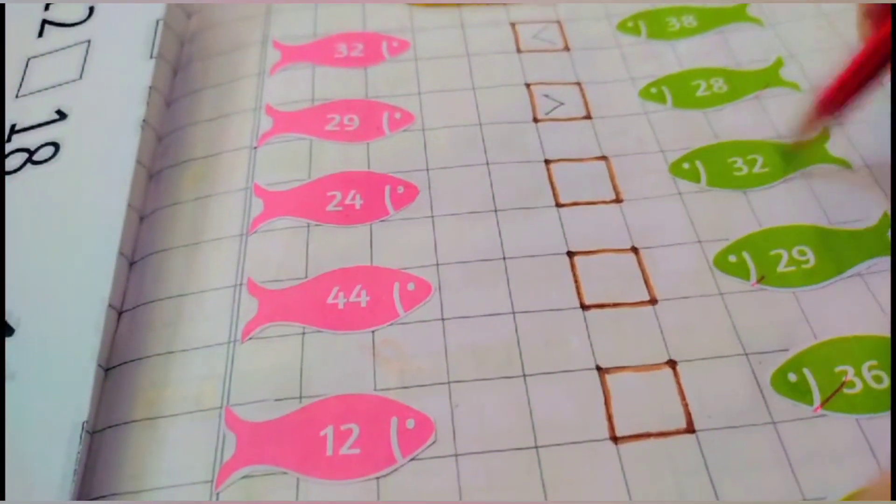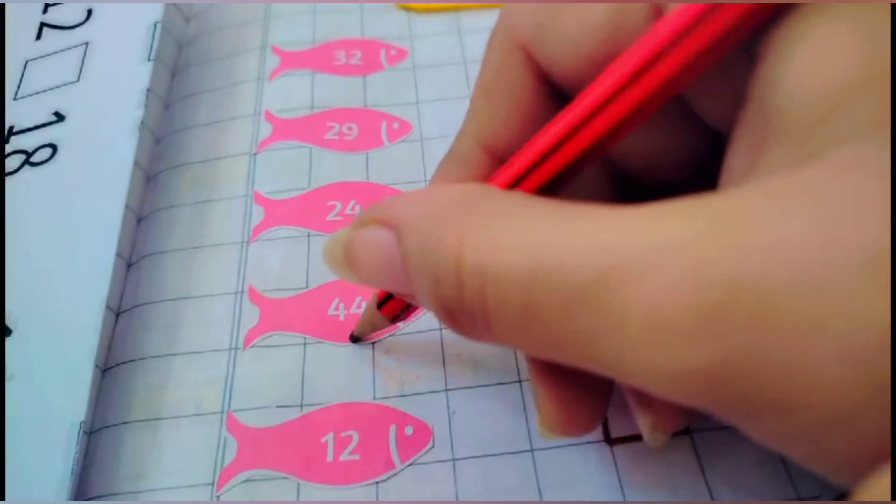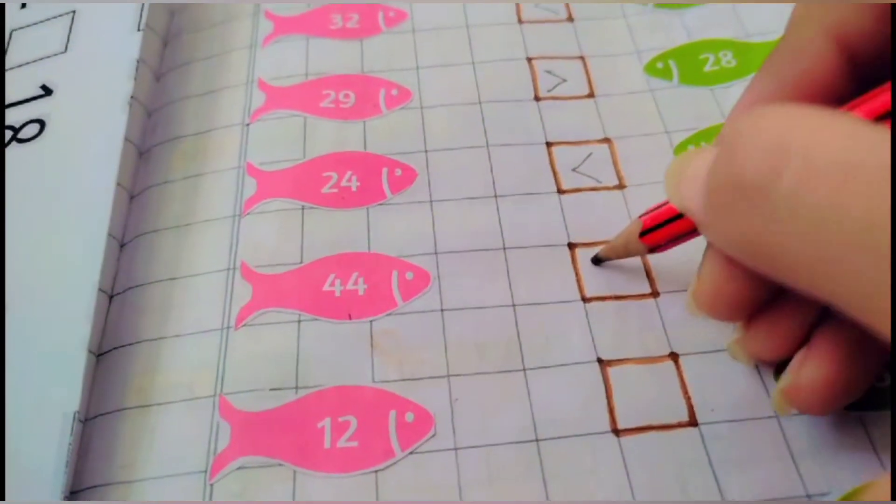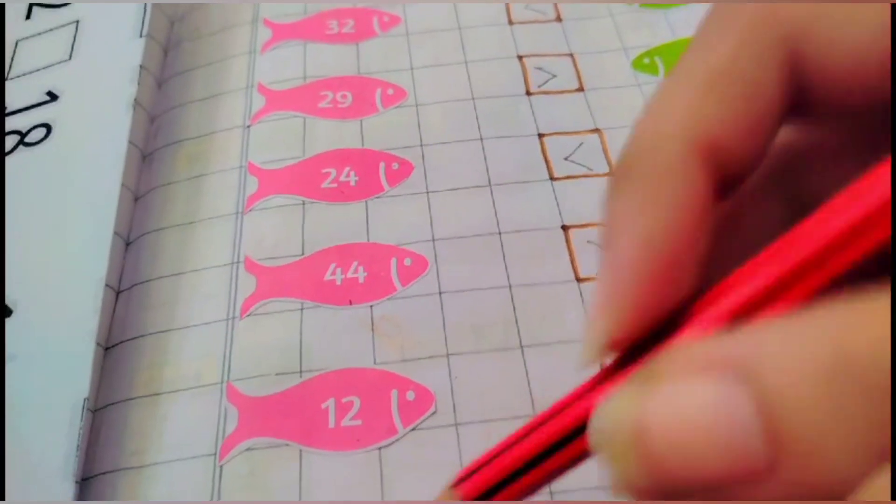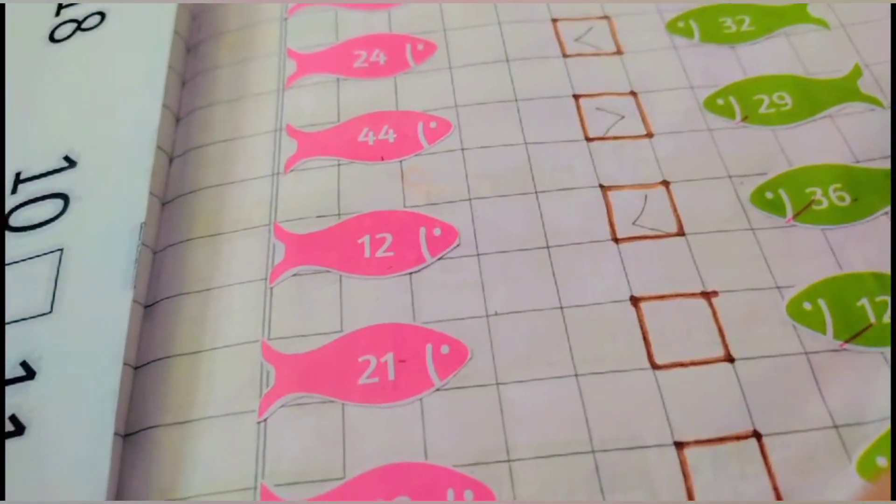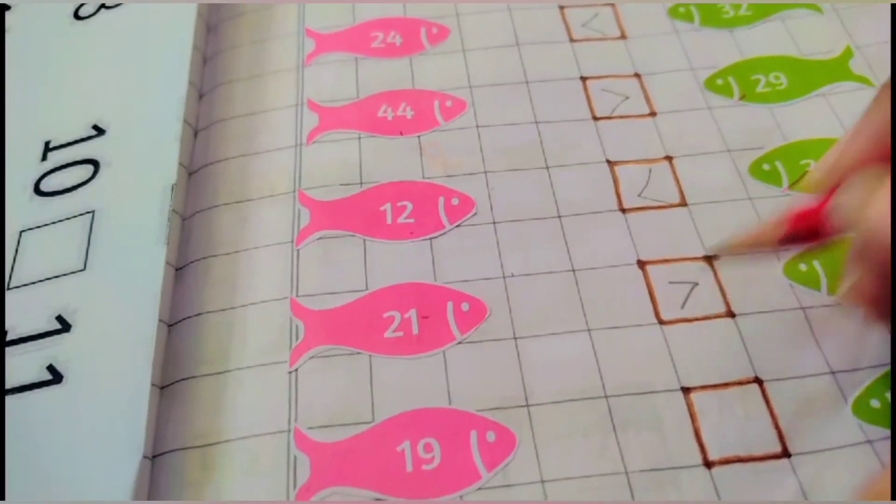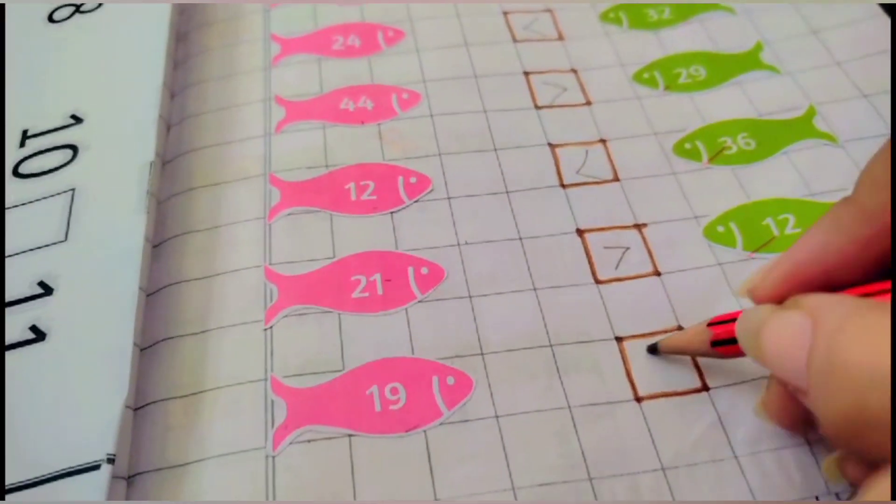Which one is greater? 24 or 32? 32. Which one is greater? 44 or 29? 44. 12 is greater or 36? 36. 21 is greater or 12? 21. 19 is greater or 16? 19.